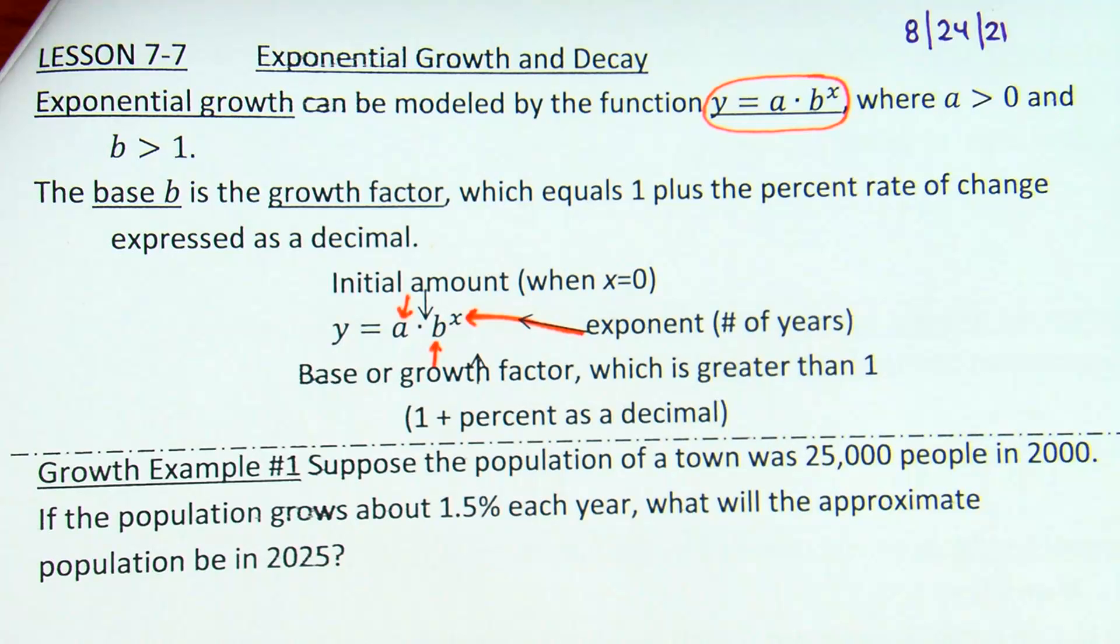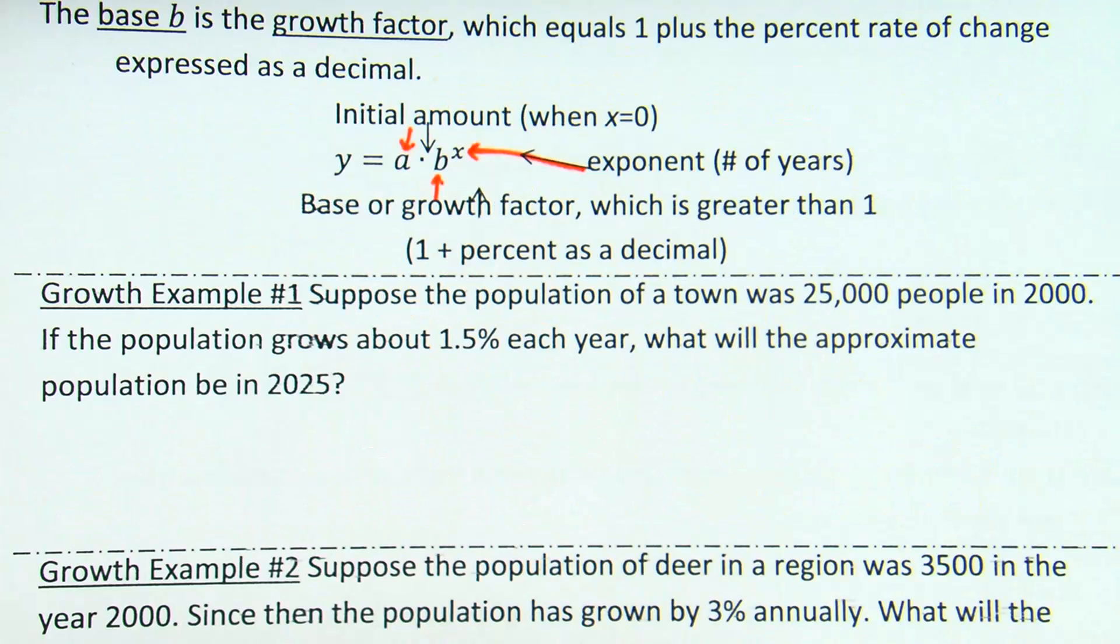So let's go ahead and look at our first growth example and see if we can figure out how to fill things in. Suppose the population of a town was 25,000 people in the year 2000. If the population grows about 1.5% each year, what will the approximate population be in 2025?